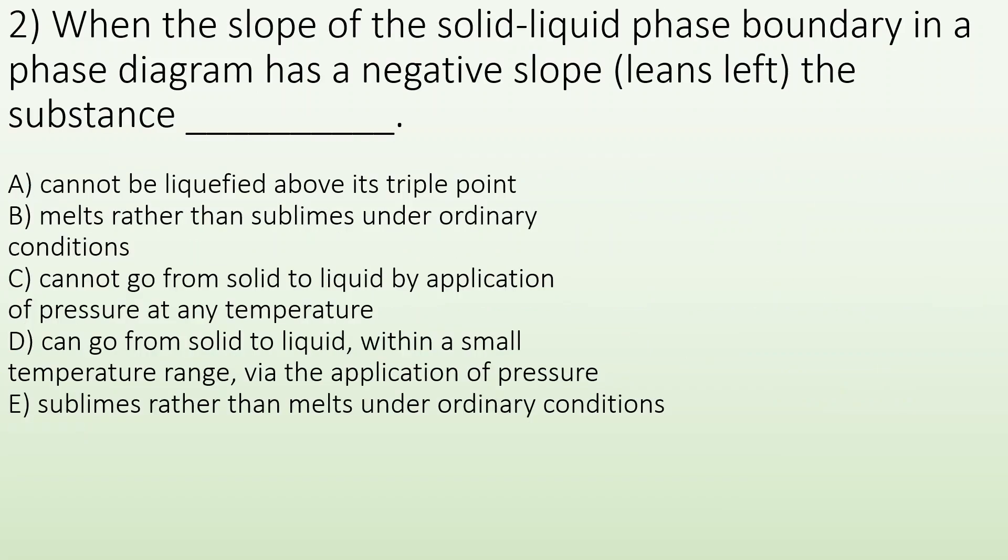Number two: when the slope of a solid-liquid phase boundary in a phase diagram has a negative slope, which means it leans left. So I have this kind of line going on, but then this right here, the solid-liquid equilibrium, leans left. The substance what?